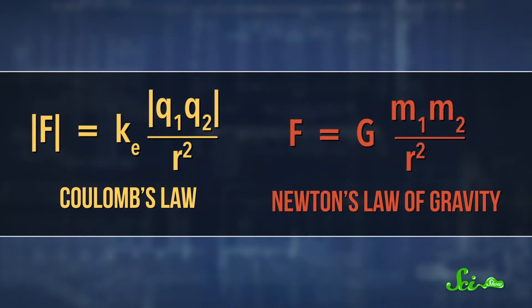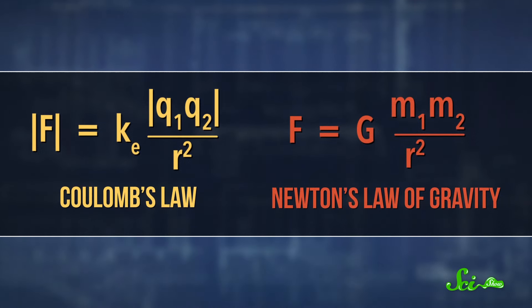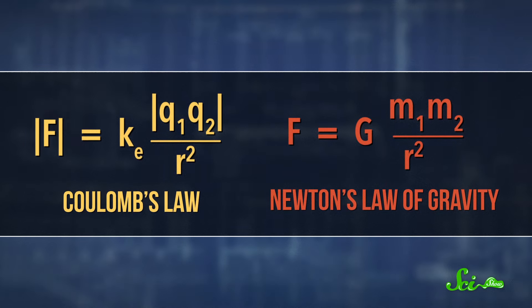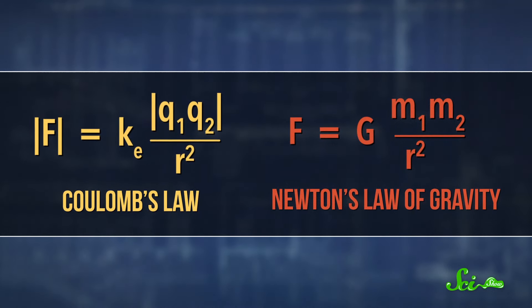See, Coulomb's Law looks a lot like another familiar law—one you've probably seen if you've taken high school physics—Newton's Law of Gravity. Like a lot of formulas in physics, they both have that radius squared in the bottom of their fractions. And they both describe how forces drop off with distance. And they do a really good job most of the time.